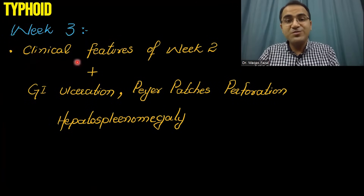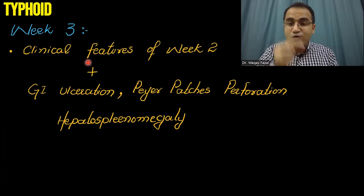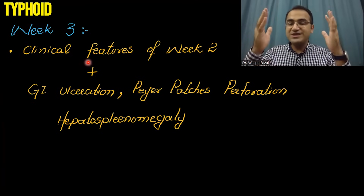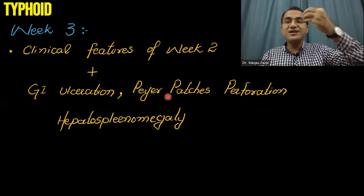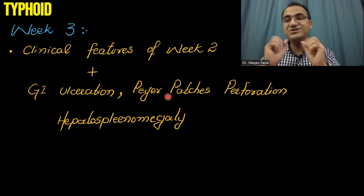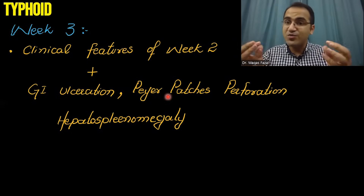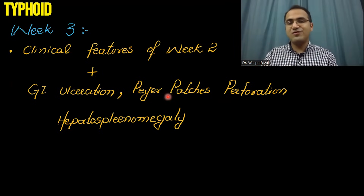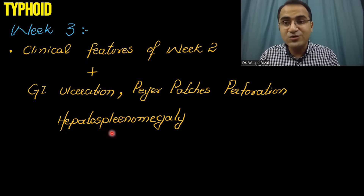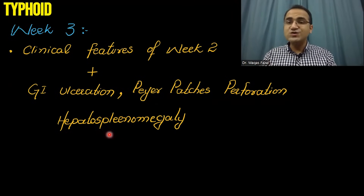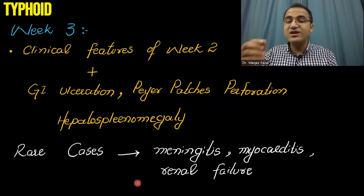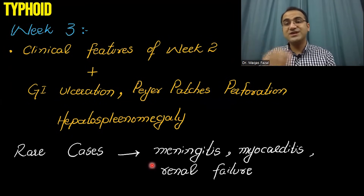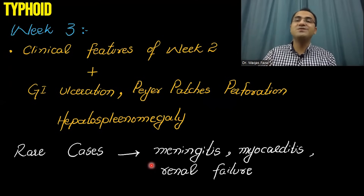In the third week, the patient has the same symptoms as in week two, but since the infection has proliferated significantly, there will be GI ulceration and perforation of the Peyer's patches in the ileum — the bacteria that proliferated in the Peyer's patches result in perforation. You will also be able to appreciate hepatosplenomegaly. In rare cases where Salmonella penetrates the blood-brain barrier, meningitis can occur.